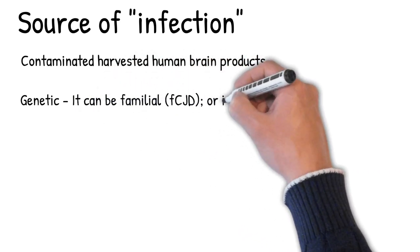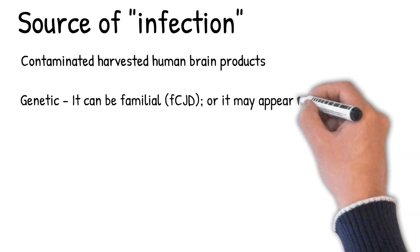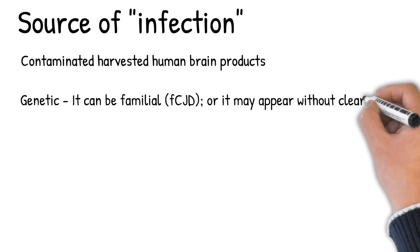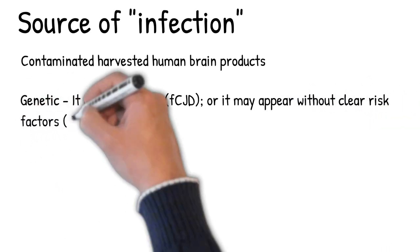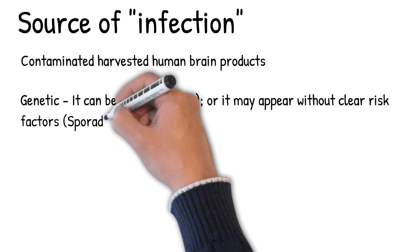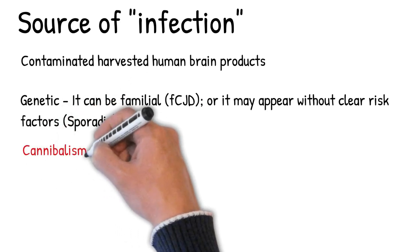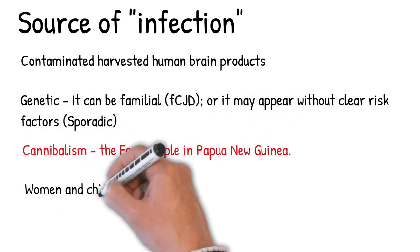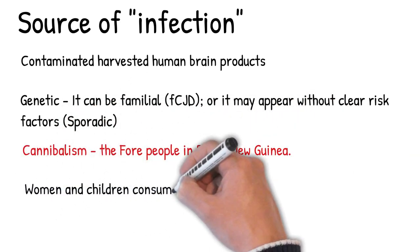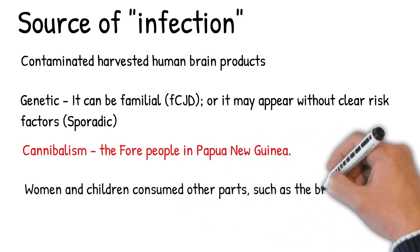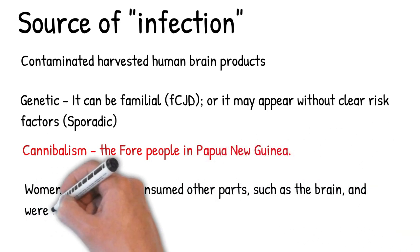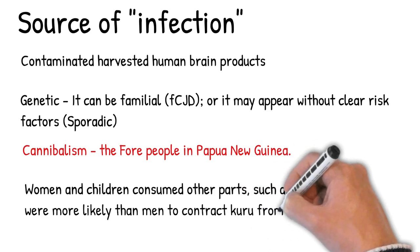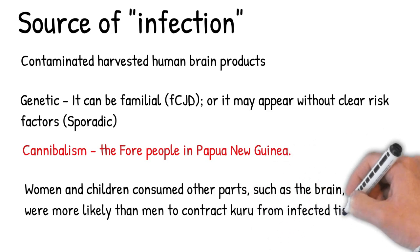Cannibalism has also been implicated as a transmission mechanism for abnormal prions, causing the disease known as kuru, primarily among women and children of the Fore people in Papua New Guinea. While the men of the tribe ate the muscle tissue of the deceased, women and children consumed other parts such as the brain, and were more likely than men to contract kuru from infected tissue.